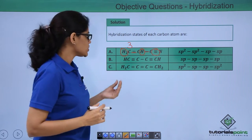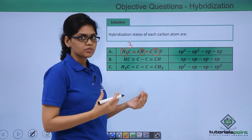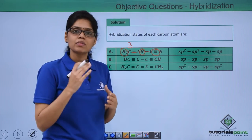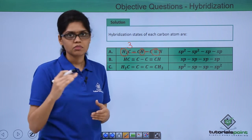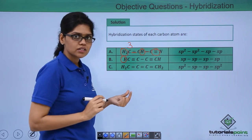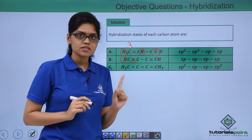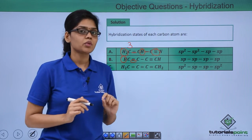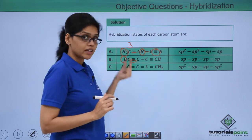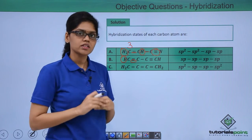Now let us look at the second structure: HC≡C-C≡CH. Here we can easily assume that since triple bonds are involved, the hybridization state is most likely SP. Let us confirm by figuring out the number of sigma bonds. Each carbon atom has only 2 sigma bonds — 1 from the hydrogen atom and 1 sigma bond from the triple bond. In a double bond there is 1 sigma and 1 pi bond, whereas in a triple bond there is 1 sigma and 2 pi bonds. So with only 2 sigma bonds, the hybridization state is SP for all carbon atoms in this structure.